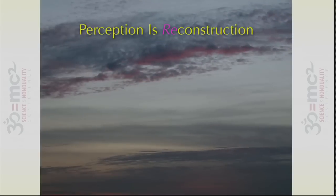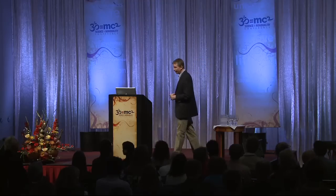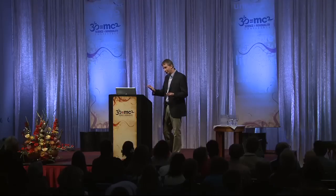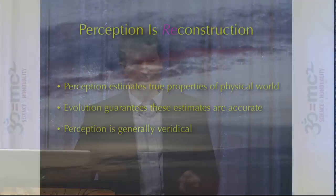What I've told you so far is all standard. What's also standard in cognitive neuroscience is the idea that perception is reconstruction. The argument is an evolutionary argument: those of our ancestors who saw the world more truly were at a fitness advantage. So we are the offspring of those who saw more truly. Our perceptions, although they're constructions, are in fact reconstructions of the truth of the 3D world out there. That's the standard story: perception estimates true properties of the physical world, evolution guarantees that these estimates are accurate, and perception is therefore generally veridical — a fancy name for true.